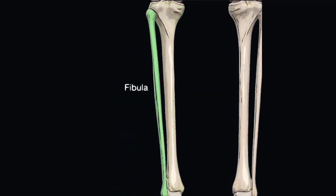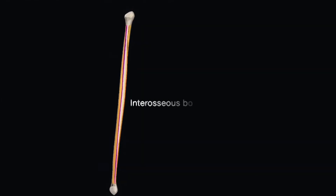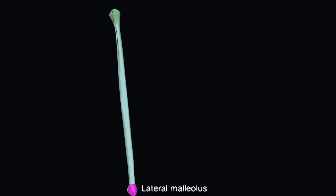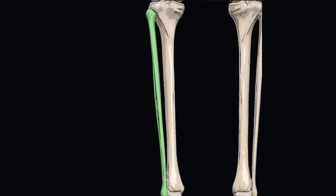Next, the fibula. The fibula lies lateral to the tibia. The shaft of the fibula connects its proximal and distal ends where it articulates with the tibia. The interosseous borders of the fibula and tibia are sharp borders which run longitudinally along the junction of the lateral surface of the tibia and the medial surface of the fibula. The interosseous membrane attaches to these borders and connects the two bones to form a fibrous joint. The articular facet of the lateral malleolus is the flat triangular area found on the medial aspect of the lateral malleolus of the fibula. It articulates with the lateral malleolar facet of the talus, contributing to the formation of the ankle joint, and provides stability against excessive eversion of the ankle and foot.